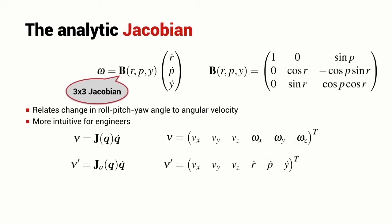What we'd like to do is to redefine the spatial velocity vector so that the rotational part now contains the roll, pitch, and yaw rates of change. If we're going to do that, then we need to change our definition of the Jacobian matrix itself. So we introduce a variant of the Jacobian matrix.